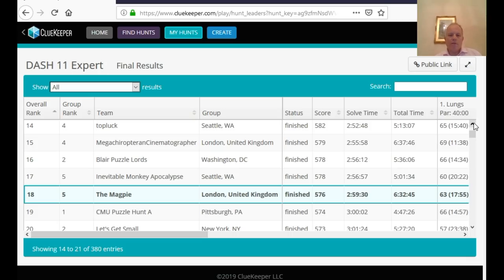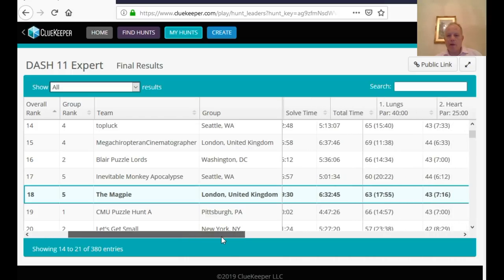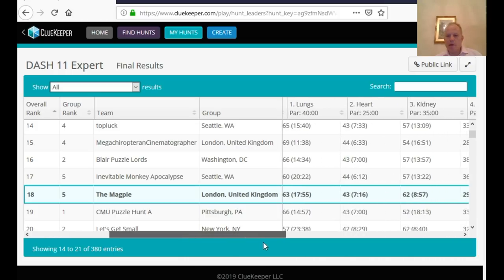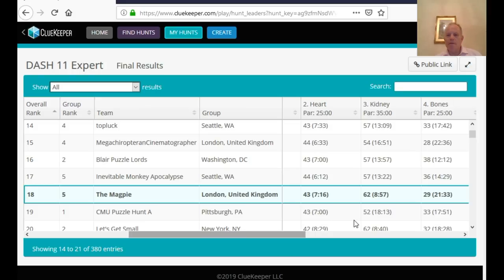Now, so here we are. Let's just have a look at how we did on that puzzle. As I said, the Magpies team finished 18th. That was us. And our score on that puzzle, the score doesn't tell us much, but here it is. Kidney, 62 points. But that was because we solved it in eight minutes, 57 seconds. So just under nine minutes, which was a pretty good time.